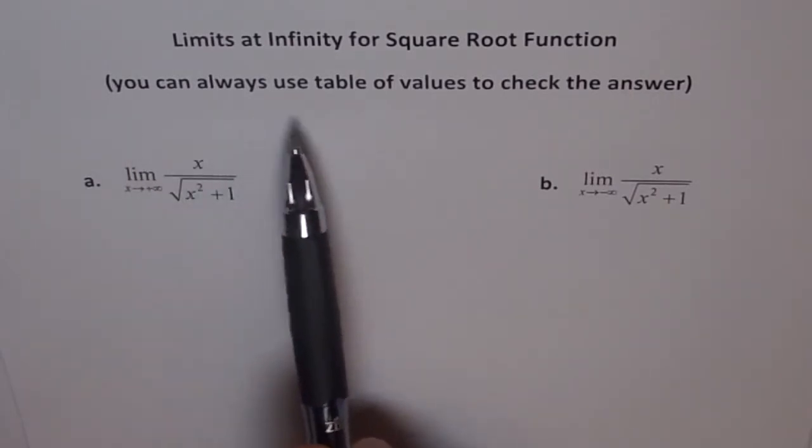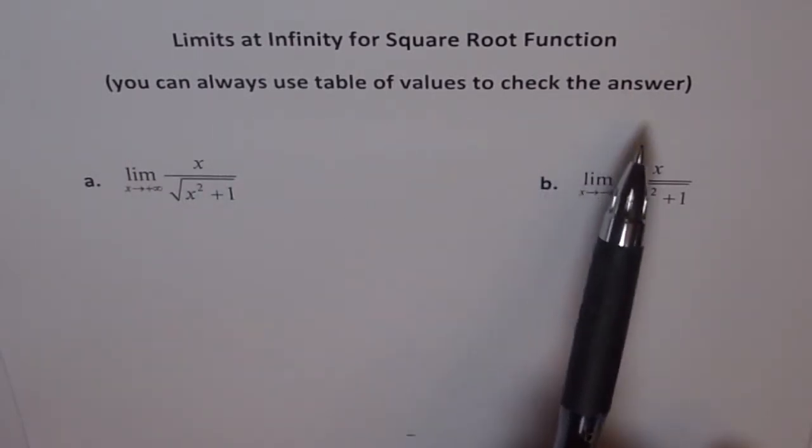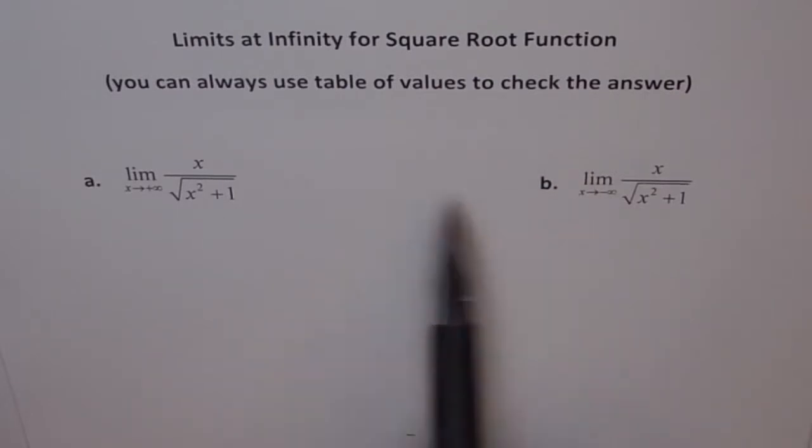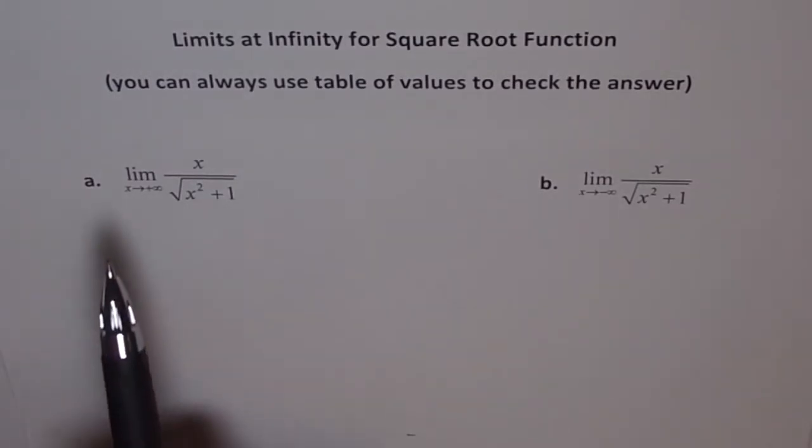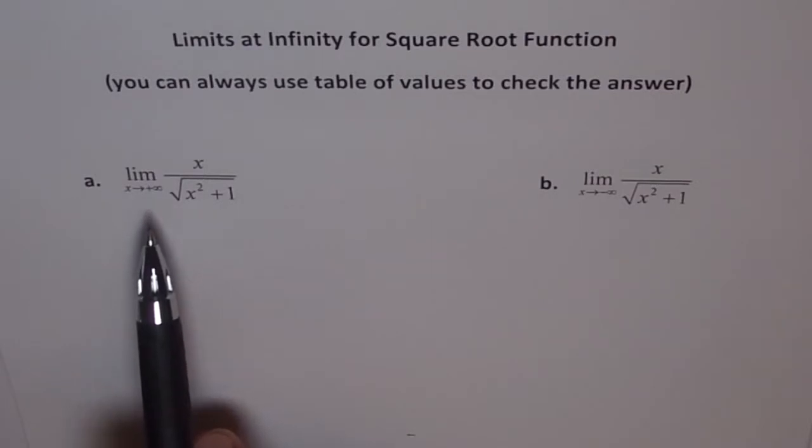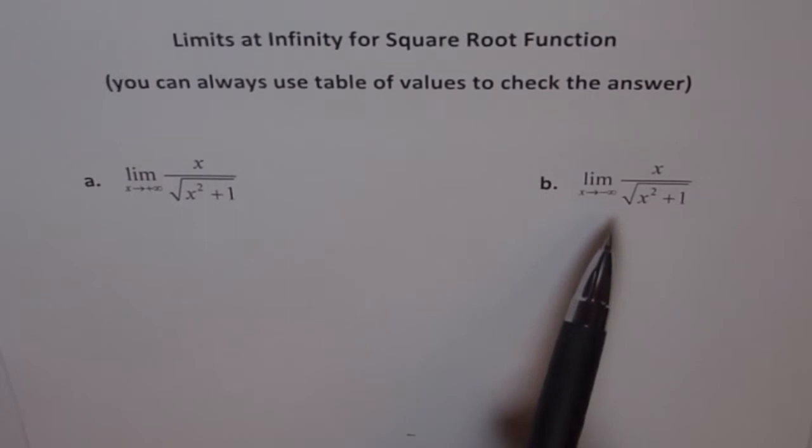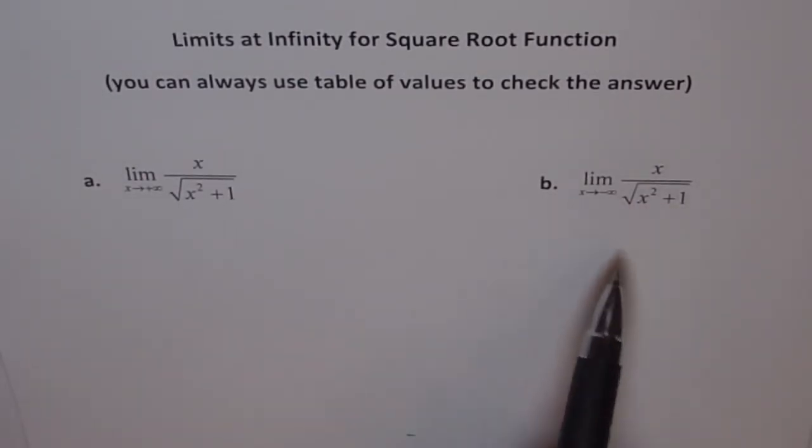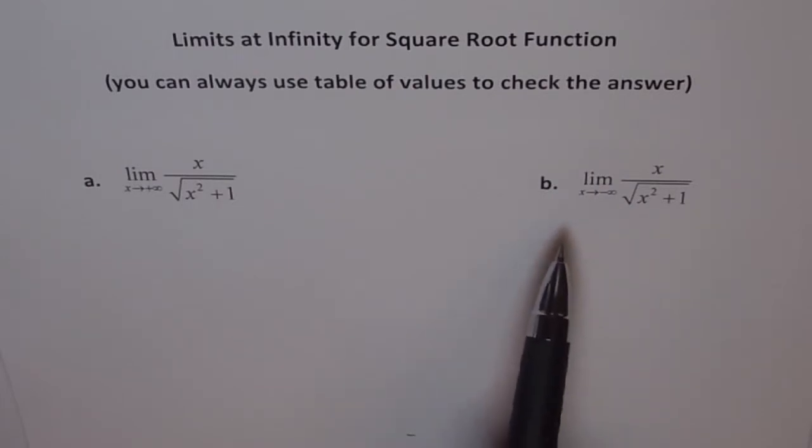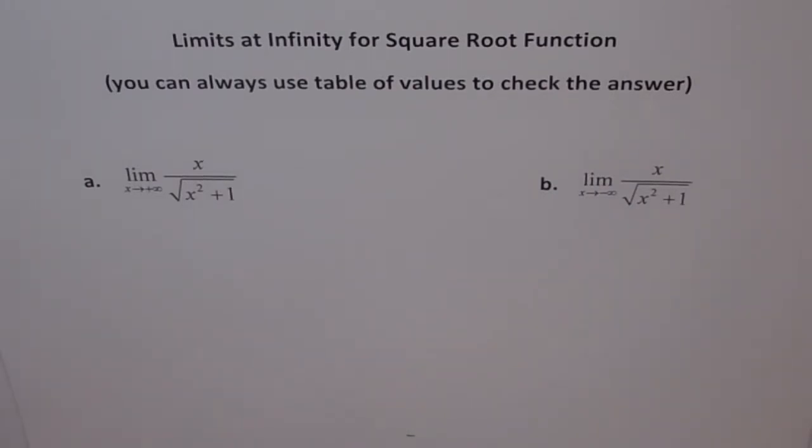For example when we say approaching plus thousand you can plug in values like close to thousand, ten thousand and check your value. In this case would be like minus hundred, minus thousand, minus ten thousand, see how does the function approach when we are approaching negative high values. You'll get an idea of the answer. That is very important for such questions.